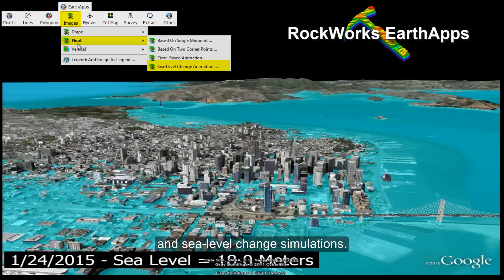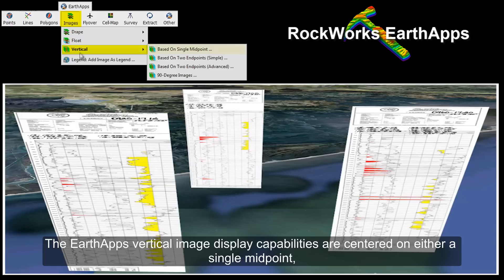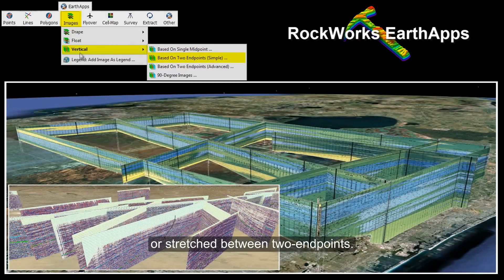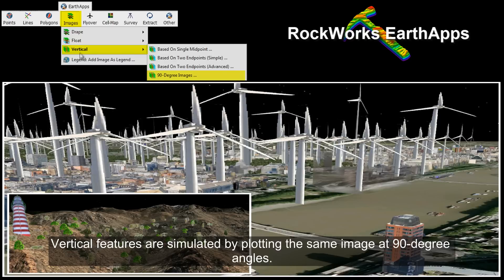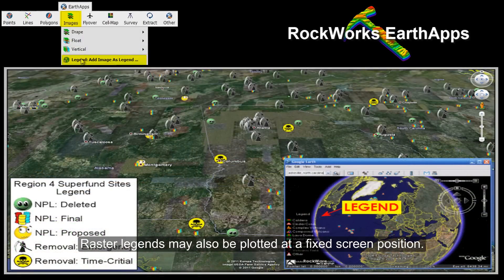Additional image overlay features include time-based floating image animations and sea level change simulations. The Earth app's vertical image display capabilities are centered on either a single midpoint or stretched between two endpoints, with vertical features simulated by plotting the same image at 90 degree angles. Raster legends may also be plotted at a fixed screen position.